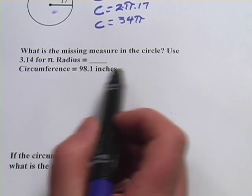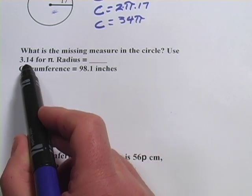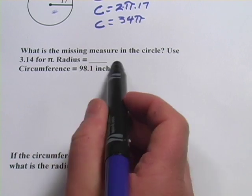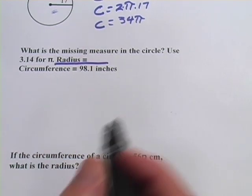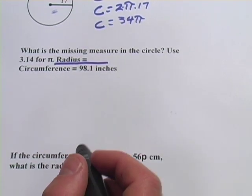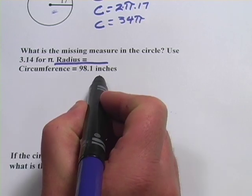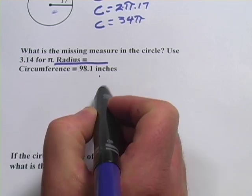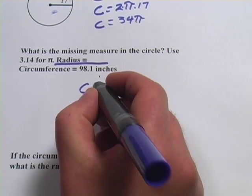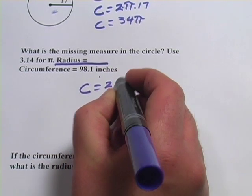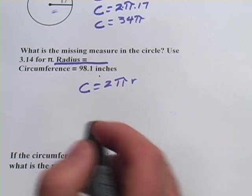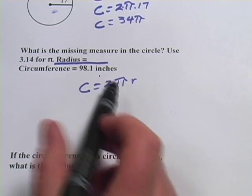Let's look at one more. This one says, what is the missing measure in the circle? Use 3.14 for π and the radius equals blank, so it's the radius that's the missing measure. That's what we're looking for. And then they tell us the circumference is 98.1 inches. Well, we're going to use our same old formula, circumference equals 2πr, and we plug in the numbers that we have.